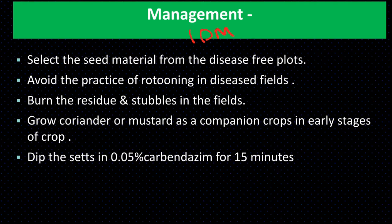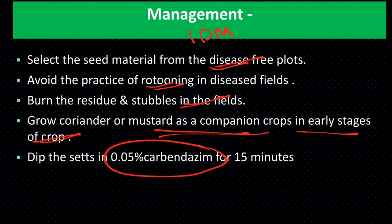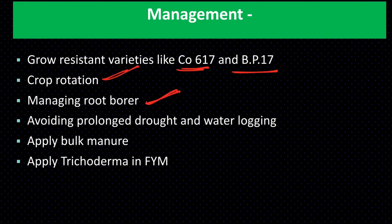Management requires integrated disease management: selection of seed material from disease-free plots; avoid ratooning in diseased fields; burn residue and stubble; grow coriander or mustard as companion crop in early stage; dip seeds in 0.05% carbendazim for 15 minutes; grow resistant varieties like CO617, BP17; crop rotation with non-host; manage root borer; avoid prolonged drought and waterlogging; apply bulky manures; and apply Trichoderma in FYM.